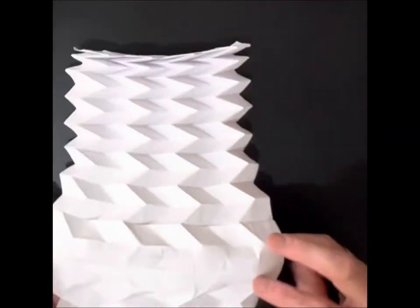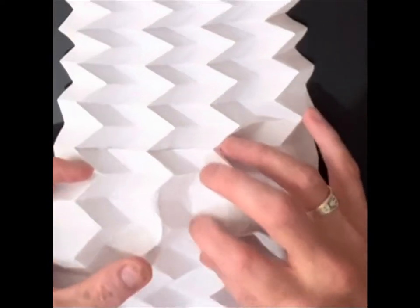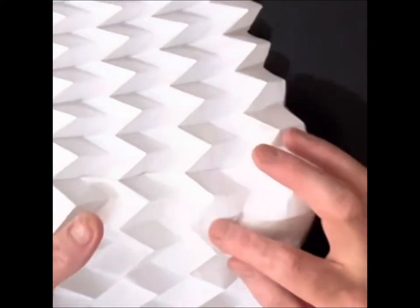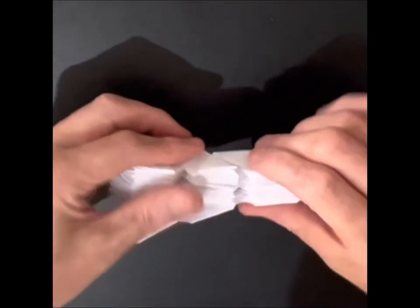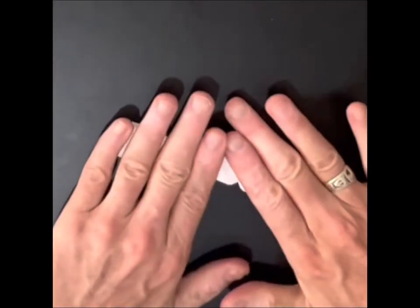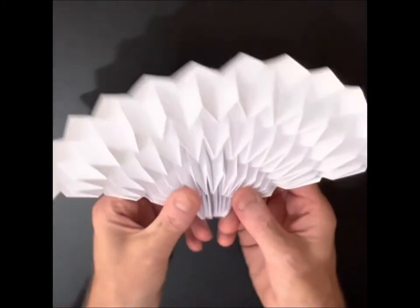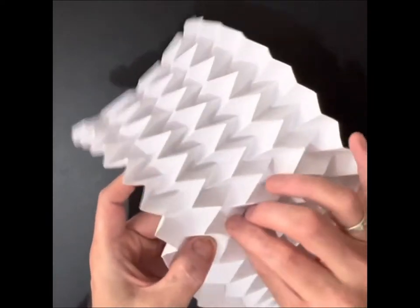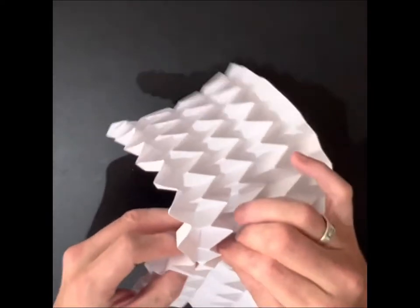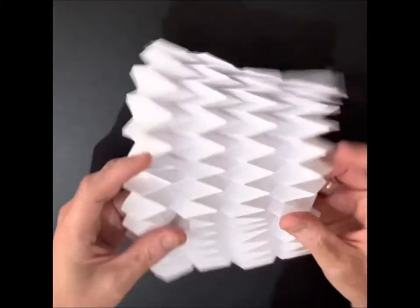I'll actually work it in like this and then crease it up again. This will give you fairly much a seamless join.